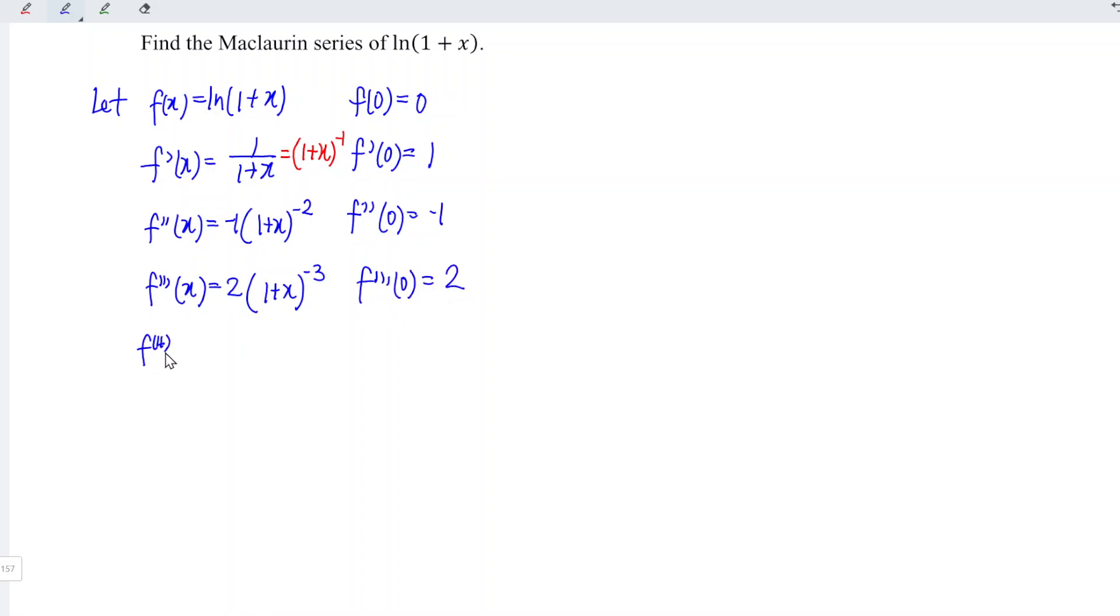For the fourth time, also power bring down, minus times minus 2 times 3 equals 6. And we have (1 + x) to the power of negative 4. At point 0, we have negative 6.